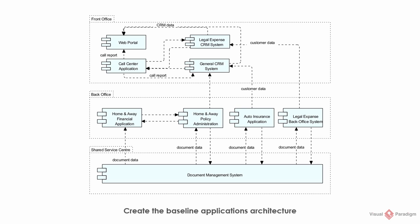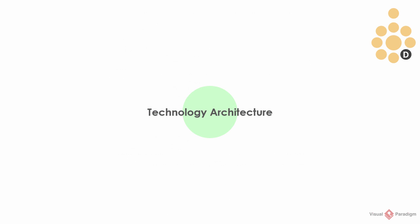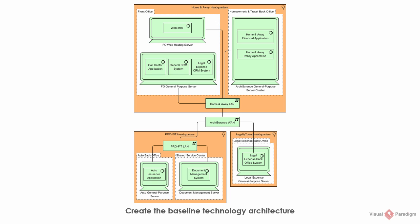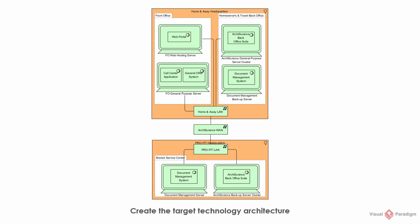This is the baseline applications architecture. It shows the overview of the current application landscape and the relationships between application components in terms of information flows, or the services they provide and consume. This is the target applications architecture — a back-office suite has been created, comprising a number of application components that support the various back-office activities. Once you've developed the data and application architectures, you can move on to developing the technology architecture. Here is an example of the baseline technology architecture, showing the software and hardware infrastructure elements supporting the application architectures, such as physical devices, networks, operating systems, and databases. This is the proposed target architecture with the integration of some systems.